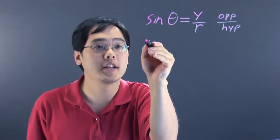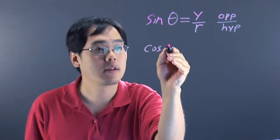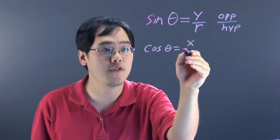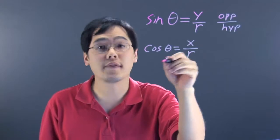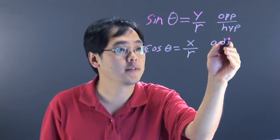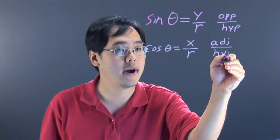Now, along with sine comes cosine, and the cosine of an angle can be thought of as the x-coordinate over the radius of a circle if you're working in circles, or if you're working in right triangles, you can think of this as the adjacent leg over the hypotenuse.